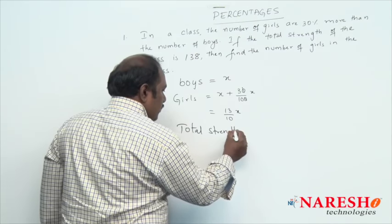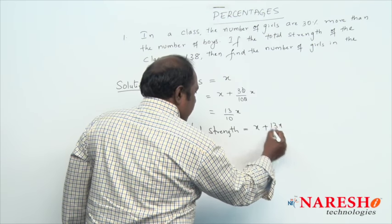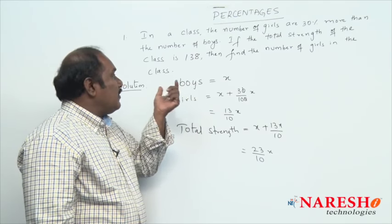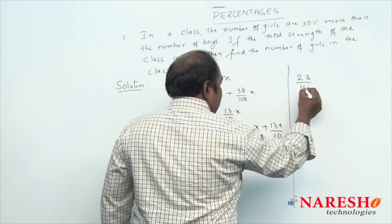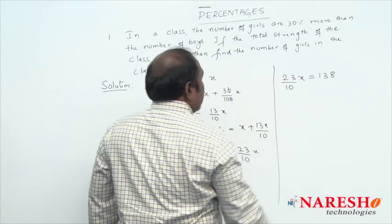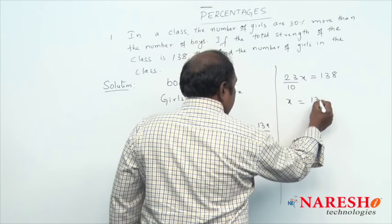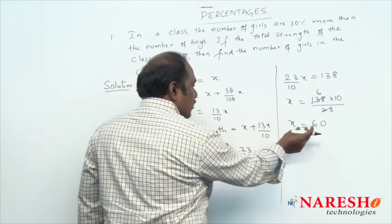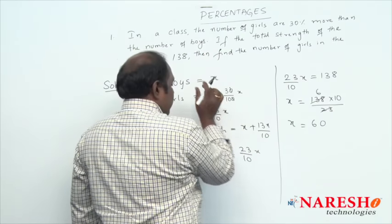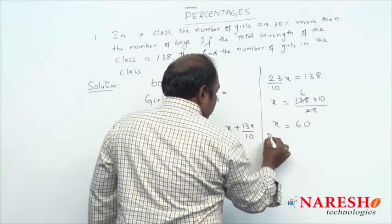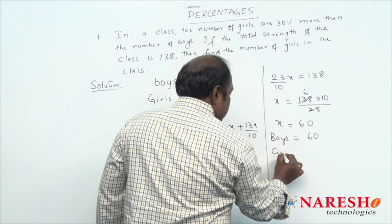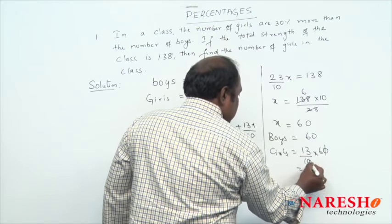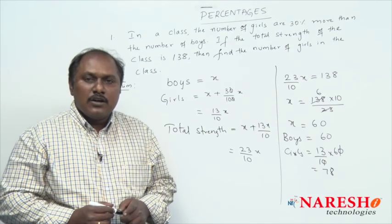Then the total strength should be x plus 13x/10, which gives 23x/10. The total strength of the class is given as 138, so 23/10 × x = 138, which gives x = 60. So the boys in the class are 60. Then the girls in the class should be 13/10 × 60 = 78. So the answer is 78.